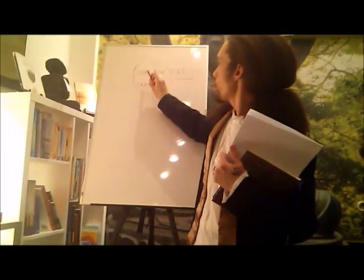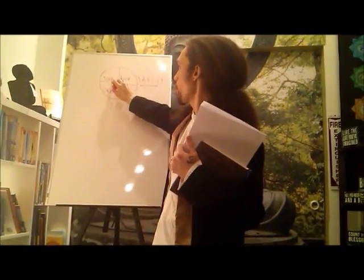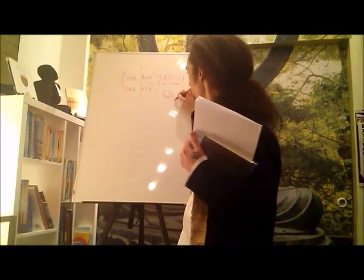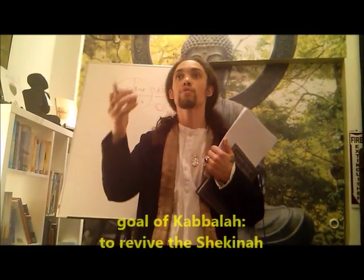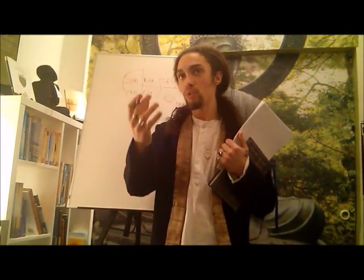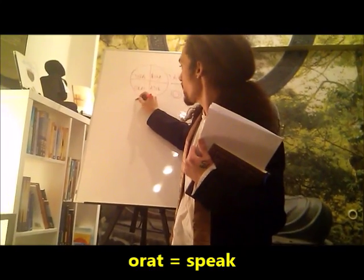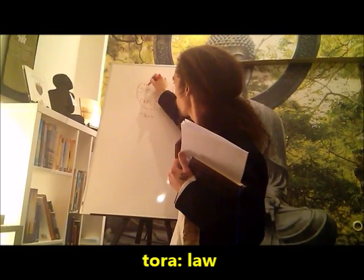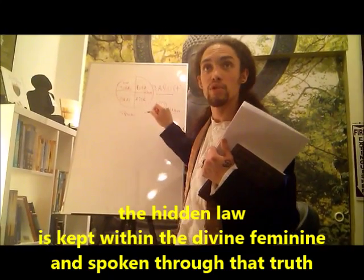Torah, as you guys know, is the five books of Moses — the first five books received by Moses on Mount Sinai. Torah; rota is wheel; ator is another word for the divine feminine goddess from Kemet, Egypt — Hathor, who is the keeper of knowledge, keeper of secrets, the divine feminine, the Shekinah. Because the goal of Kabbalah is to revive the Shekinah, the divine feminine aspect that has been repressed for thousands of years. You guys will receive light initiations today to connect to that aspect. Orate means to speak. So the hidden law is kept within the divine feminine and spoken through that truth — that's what Tarot translates as.